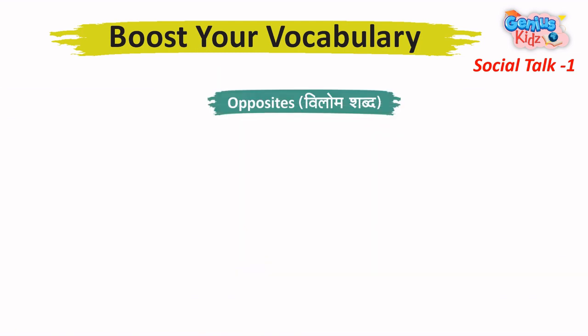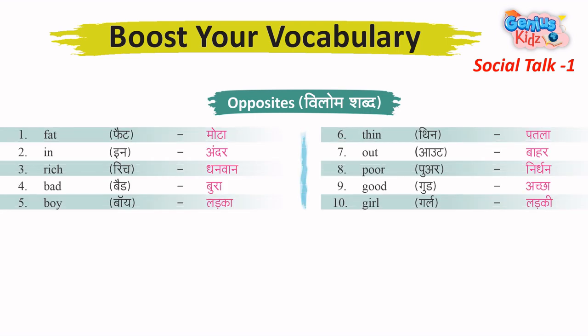Opposites – Vilom Shabd. 1. Fat – Mota. 2. In – Andar. 3. Rich – Dhanwan. 4. Bad – Bura. 5. Boy – Ladka.